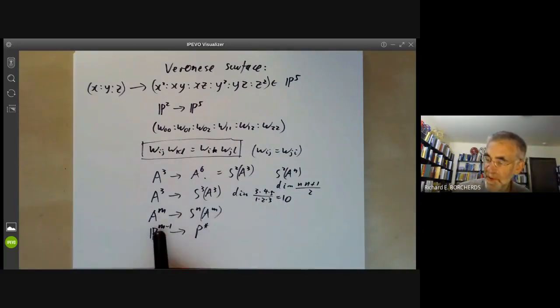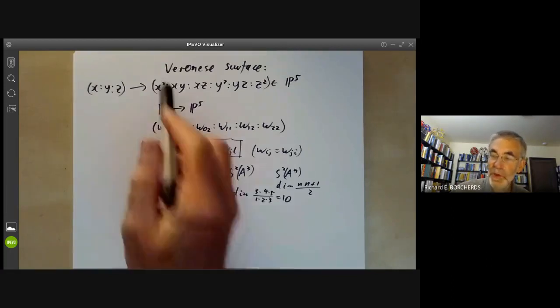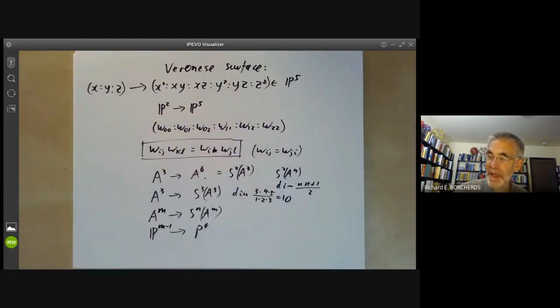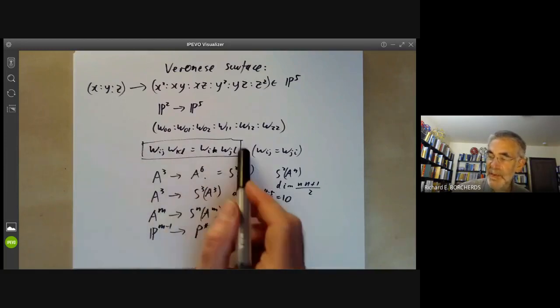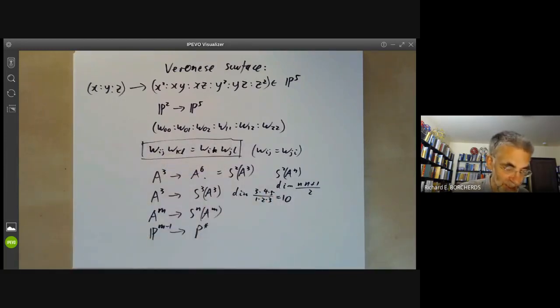So the images of these maps from projective space to projective space are all called Veronese varieties, and you can define them by a similar but more complicated set of equations.